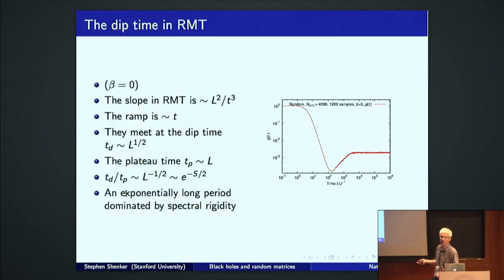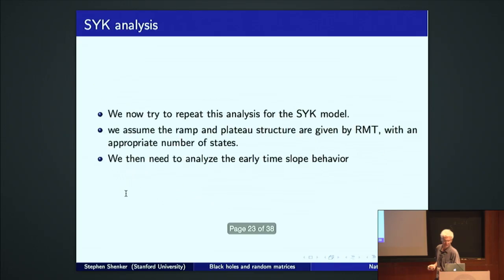So there's a new time scale that's made its appearance. It's not just this ultra-late time when the nearest neighbor's spacing. It's the time when long-range spectral rigidity dominates the behavior of the function.